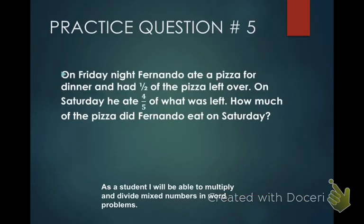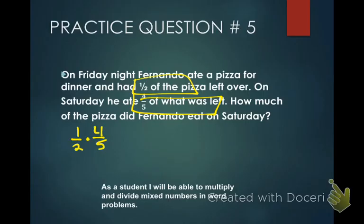Example number five: On Friday night, Fernando ate a pizza for dinner and had half of the pizza left over. On Saturday, he ate four-fifths of what was left. We have one-half of the pizza and he's going to eat four-fifths of what was left — so of means multiply. One-half times four-fifths: pre-simplify — two and four: two goes into two one time, two goes into four two times. Multiply across — that gives us two over five. He ate two-fifths of the pizza on Saturday.